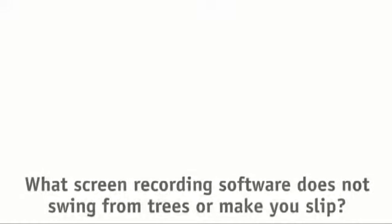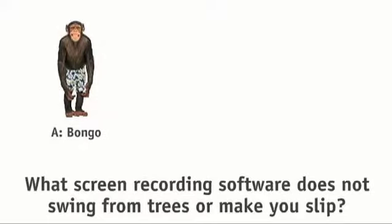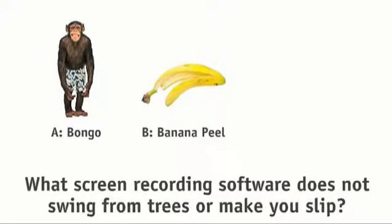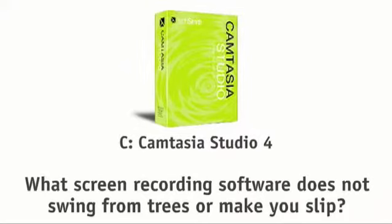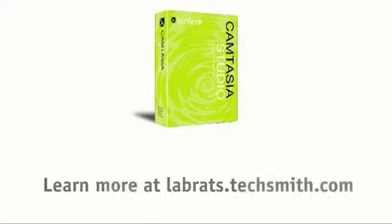Earlier in the show, we asked you: what screen recording software does not swing from trees or make you slip? Is it A, Bongo the Chimp, B, a banana peel, or C, Camtasia Studio 4? The answer is Camtasia Studio 4. Learn more at labrats.techsmith.com.